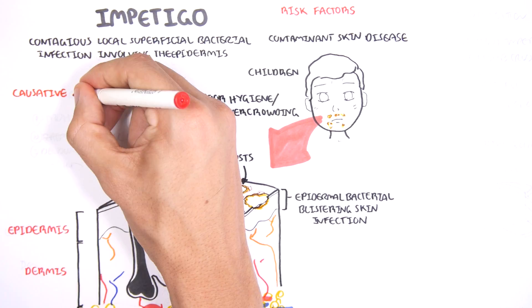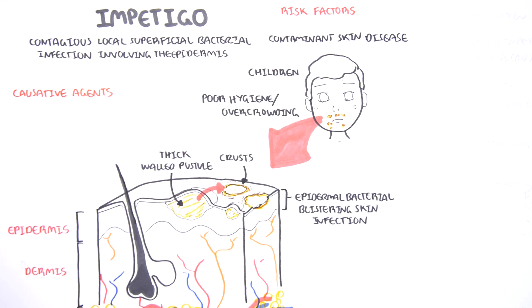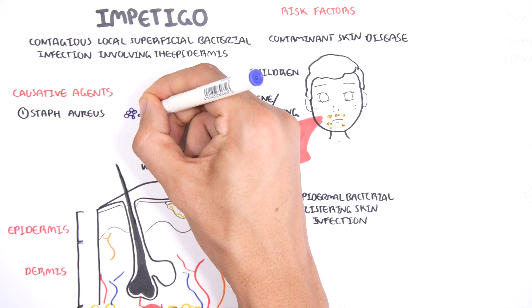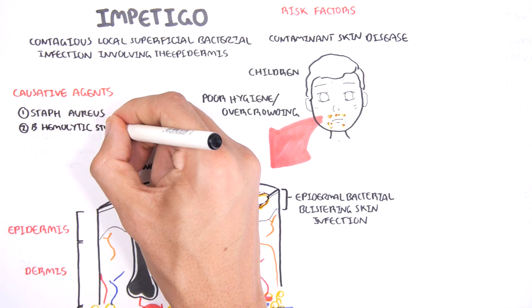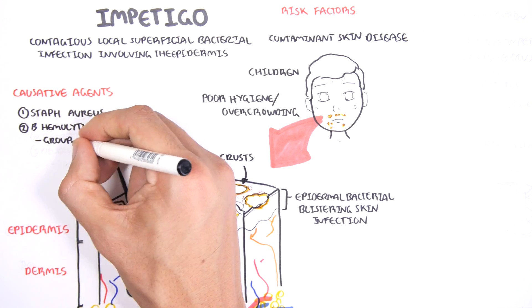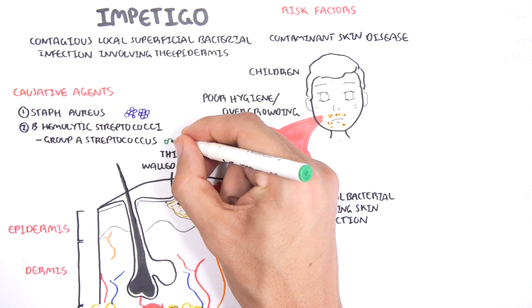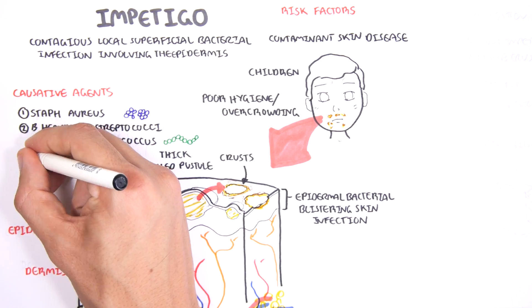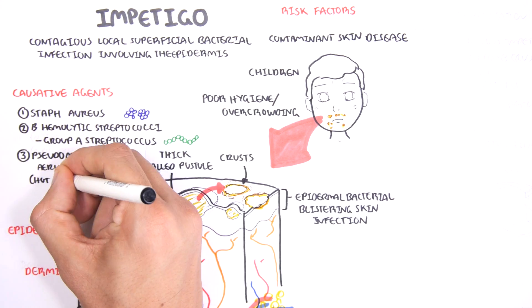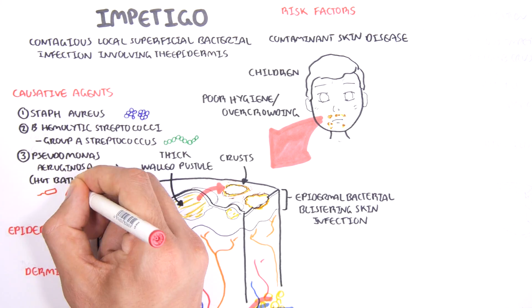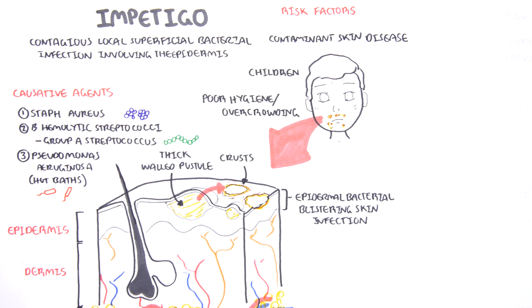The causative agents of impetigo, the main one is Staphylococcus aureus, which is a gram-positive cocci. The second include beta-hemolytic streptococci, which is a group of streptococci including group A streptococcus, also known as S. pyogenes. You also have a sort of uncommon cause, which is Pseudomonas aeruginosa, which usually occur in hot baths because it is contagious.